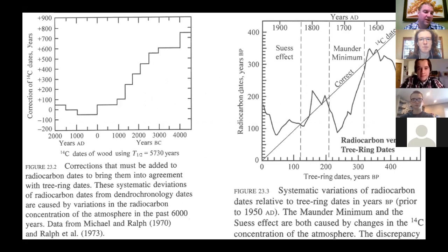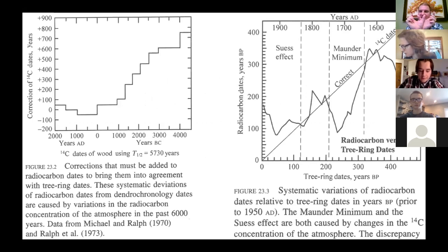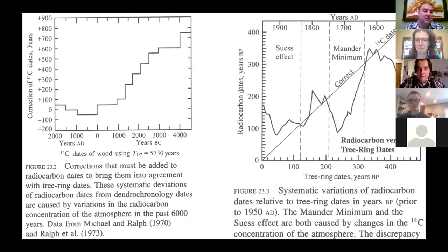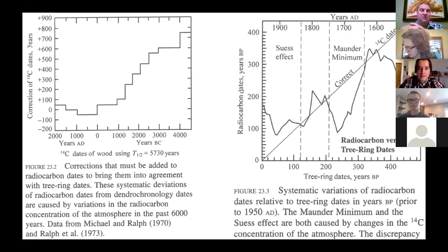With dendrochronology, we count tree rings to know exactly how old a tree is, measure carbon-14 in those rings, and match overlapping rings from different trees like puzzle pieces to build calibration graphs. Over the past 6,000 years we can get good correction factors. Over the past 3,000 years we've been pretty close to zero correction, but from about 1,000 to 5,000 BCE we do have to add time to correct those dates.